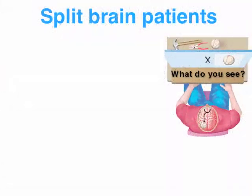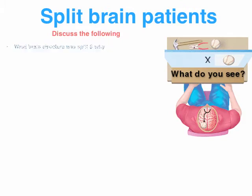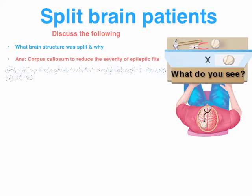Split brain surgery has been a stumbling block for students over many years, so expect a significant question on this. A part A question might ask you to discuss the severing of the corpus callosum to reduce the severity of epileptic seizures. A part B might require you to explain why a patient can or can't name an object flashed to either the left or right visual field.